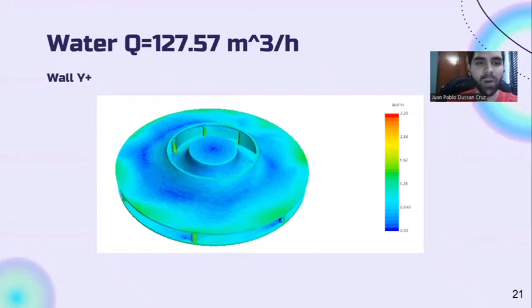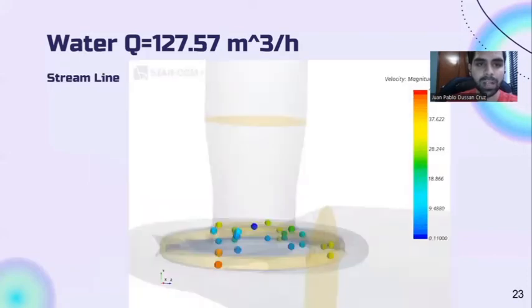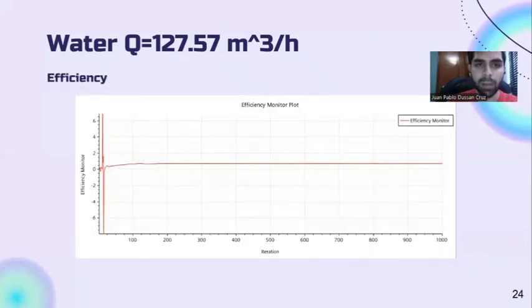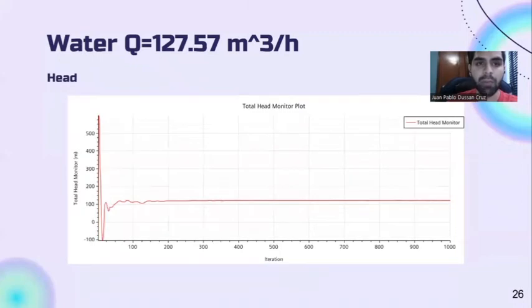Now we have water with a flow of 127.57 m³/hr. The simulation confirms that the steam pressure is greater than the steam pressure of water at the specific temperature of the project, and that is the reason we don't have cavitation. The impeller velocity was well built, having a lower speed in the center of the impeller that increases as its radius increases. The wall Y-plus value is between 0 and 5. In the streamline, we see the actual behavior of the water inside the pump. The final efficiency is 0.7, the final torque is 200 N·m, and the total head is 125 meters.